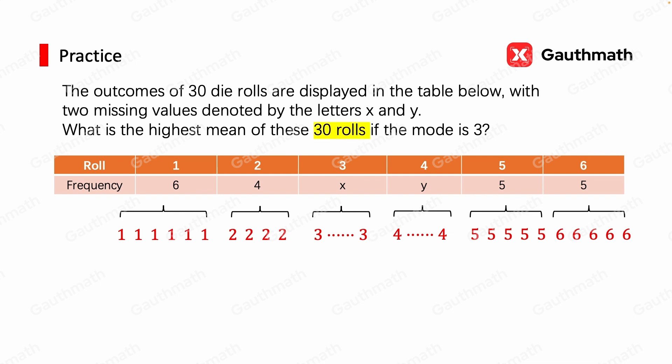We're given that there are a total of 30 rolls, so the total frequency is 30. That means 6 plus 4 plus x plus y plus 5 plus 5 equals 30. And therefore, x plus y equals 10.